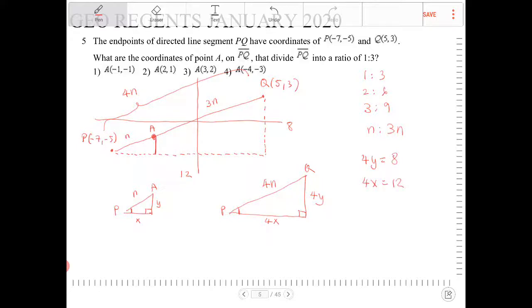Look at that. I have all the information I need to figure out what the horizontal and vertical components are of the smaller triangle. So y here is going to equal to 2 because I divide 8 by 4. And x will equal to 3 because I divide 12 by 4.